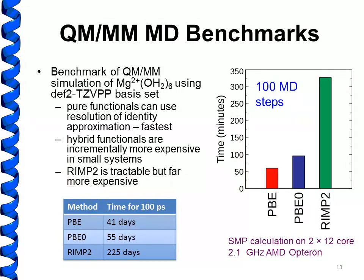To give an idea of the computational cost, we performed benchmark QM/MM-MD simulations of just 100 time steps using three different quantum methods on the hexacoordinate magnesium in polarizable MM solvent, in each case using the DEF2-TZVPP basis set. The fastest simulations use the pure DFT functional PBE — significantly reduced cost because there are no exchange integrals to calculate. Surprisingly, performing MD using PBE0, a hybrid functional, is only incrementally more expensive, so for small systems like this it is completely reasonable to use a hybrid functional. This is a significant advantage over plane-wave basis set methods like CPMD, where exchange integrals are very expensive.